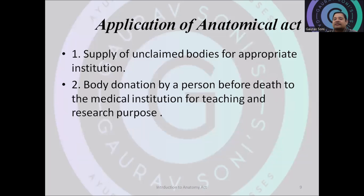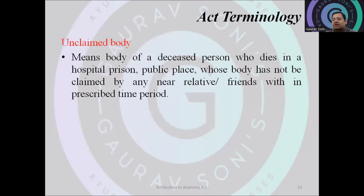The two main purposes of the Anatomy Act are: first, to supply unclaimed bodies to appropriate institutions; and second, to facilitate voluntary body donation for research or study in medical colleges. An important term in this act is the unclaimed body, which refers to the body of a deceased person who dies in a hospital, prison, or public place and whose body is not claimed by any near relative or friends within the prescribed time period of 48 hours.